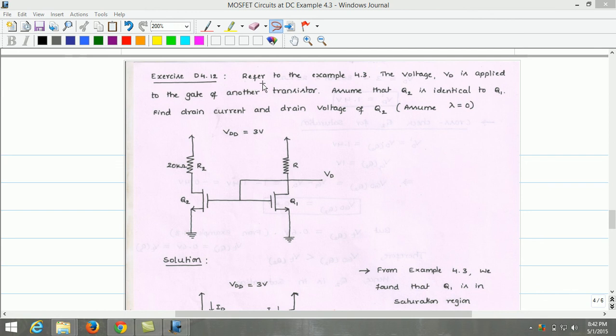The exercise problem given here is related to example 4.3. In this example, the voltage Vd is applied to the gate of another transistor. Assuming Q2 is identical to Q1, we need to find the drain current and drain voltage of the Q2 transistor.